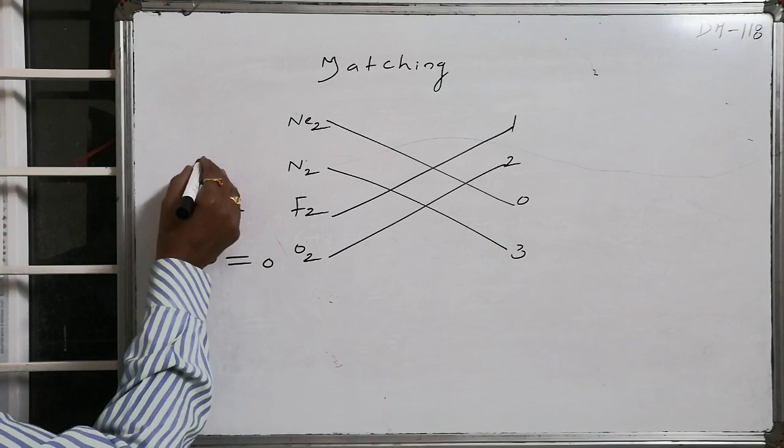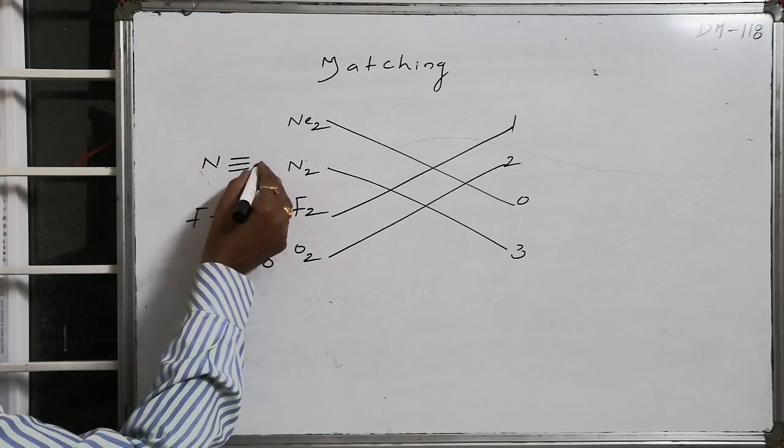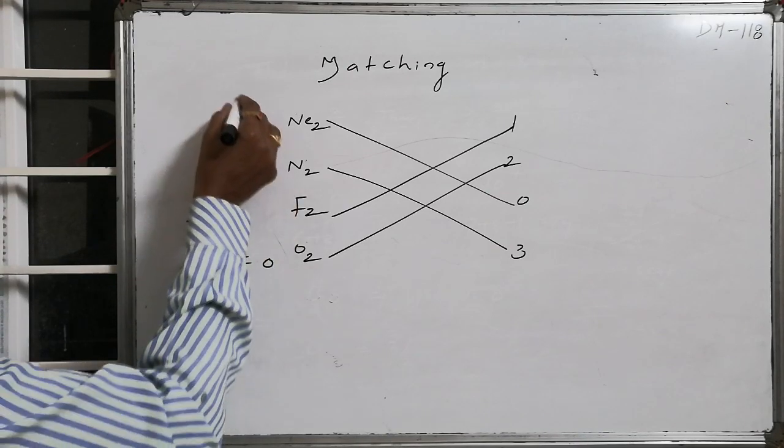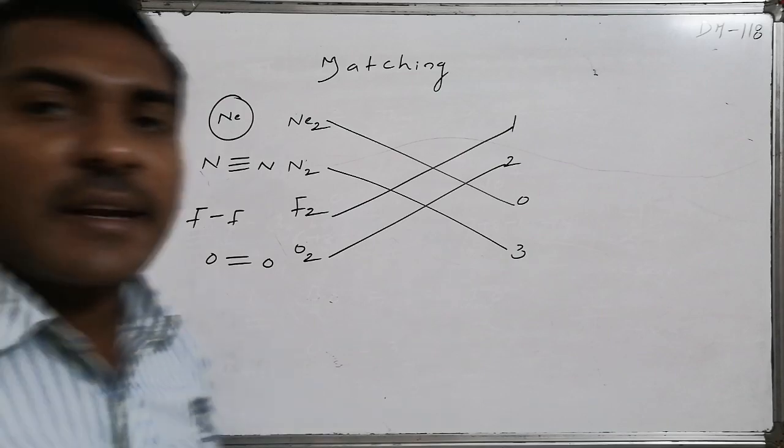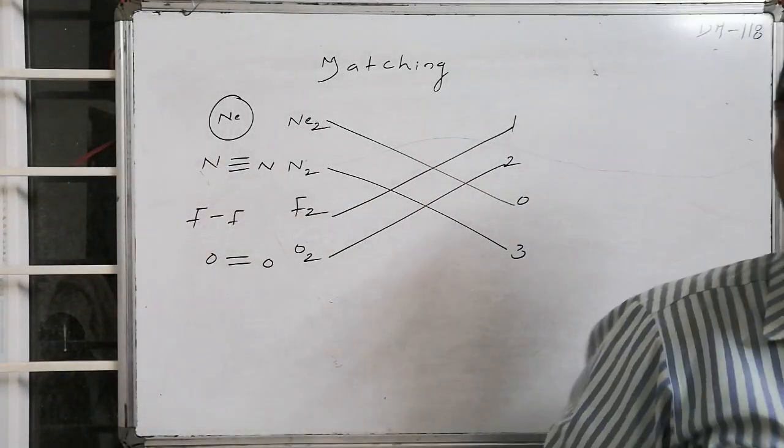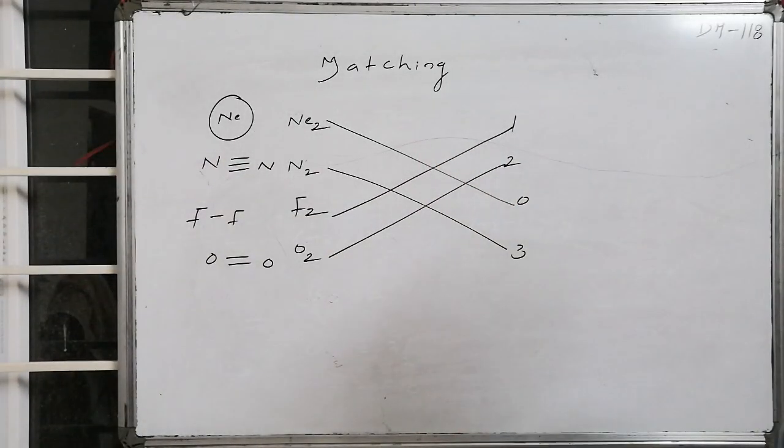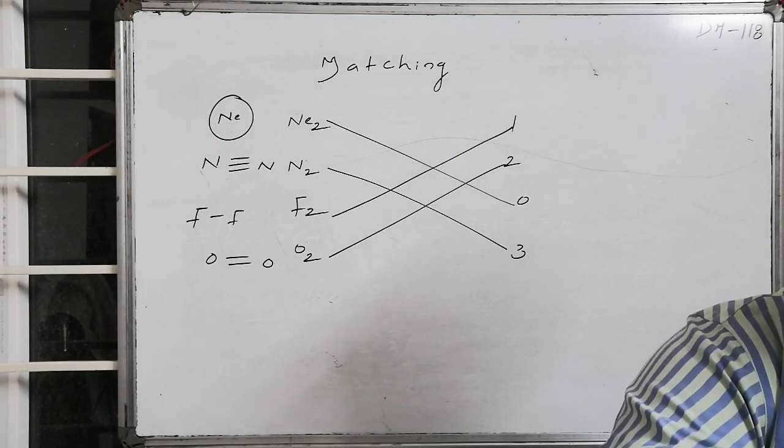This is O and O combination O2, this is N and N combination N2. Neon is always present as an independent atom, a monoatomic species. It does not have any kind of molecular nature.